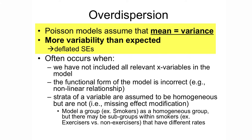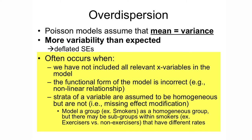Over-dispersion tells us that our estimate of the standard errors may be too low. Deflated standard errors mean we have exaggerated levels of precision, increasing the likelihood of a type 1 error — incorrectly rejecting the null hypothesis when it is actually true. Over-dispersion often occurs when relevant explanatory variables are not included in the model, the functional form is incorrect, or strata of a variable are assumed to be homogeneous but are not. For example, we might model smokers as a homogeneous group, but there might be subgroups — like exercisers and non-exercisers — that have different rates.